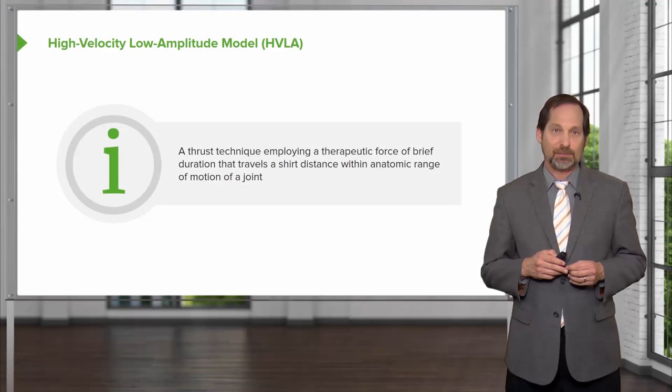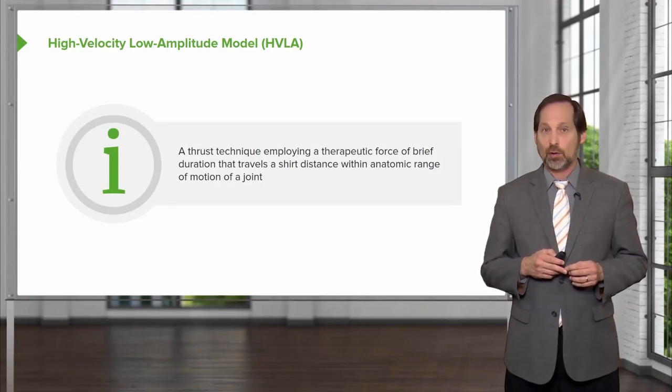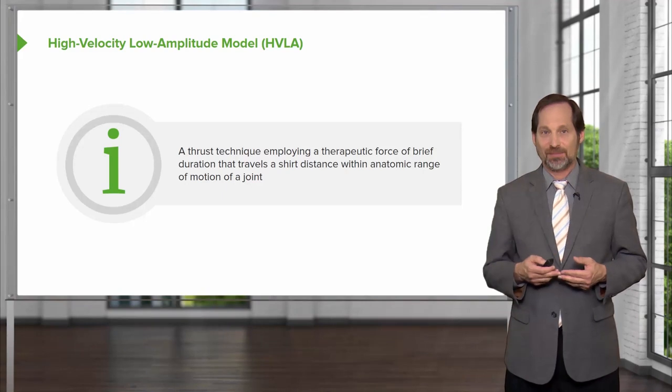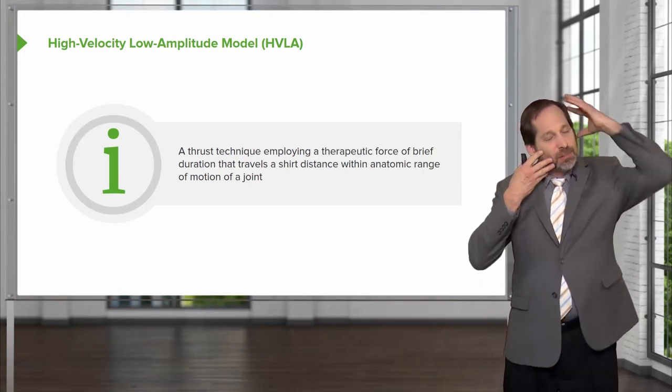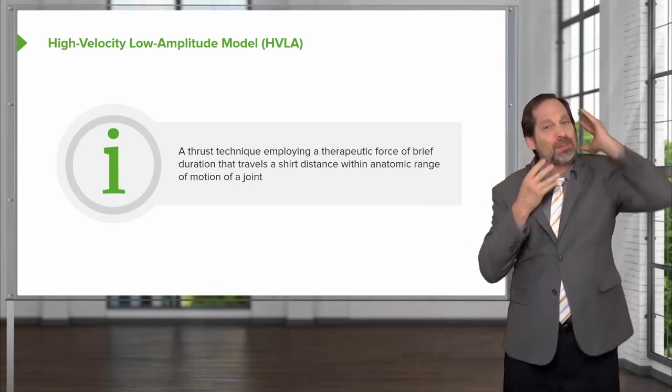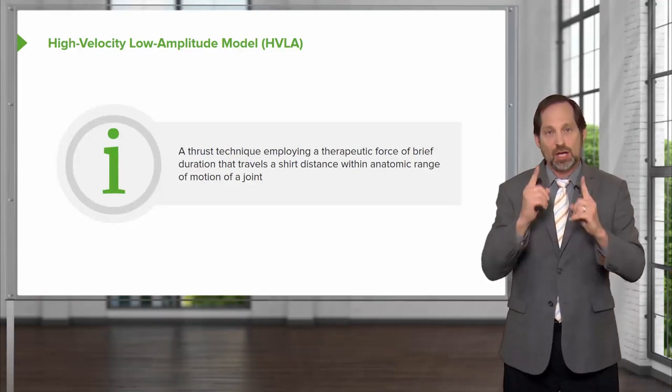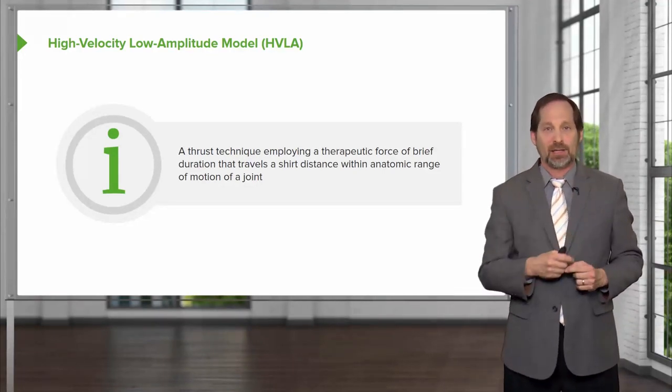The next type of manipulation is high velocity, low amplitude, HVLA thrusting. It's when you take a body part and move it past the point where it wants to go, short distance, very rapidly. It's a thrust. Typically you'll hear a pop or an articular release, but not always. It does push right through the barrier.